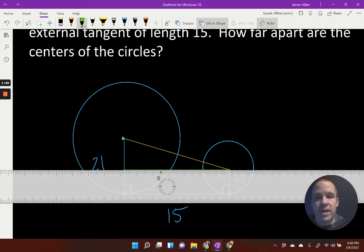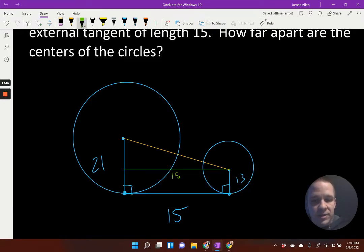this green line that I just added in here is also going to be 15, because I've actually created a rectangle. I've run it parallel, so that's a right angle, that's a right angle, this is a right angle, and if each side is 15 and 15,